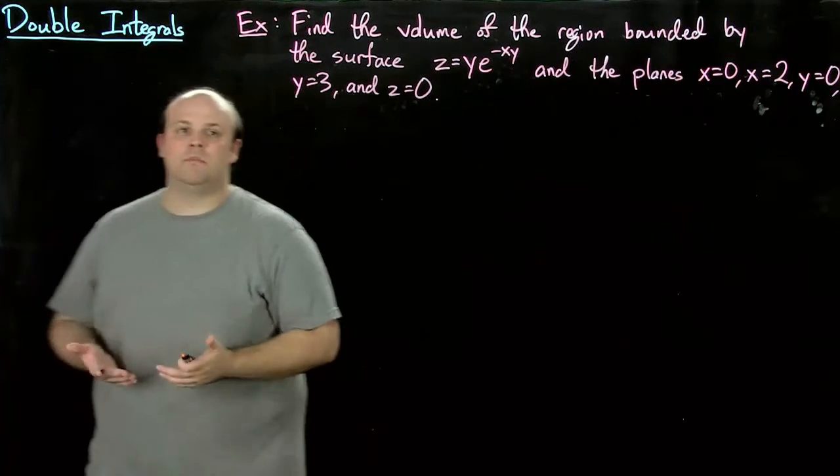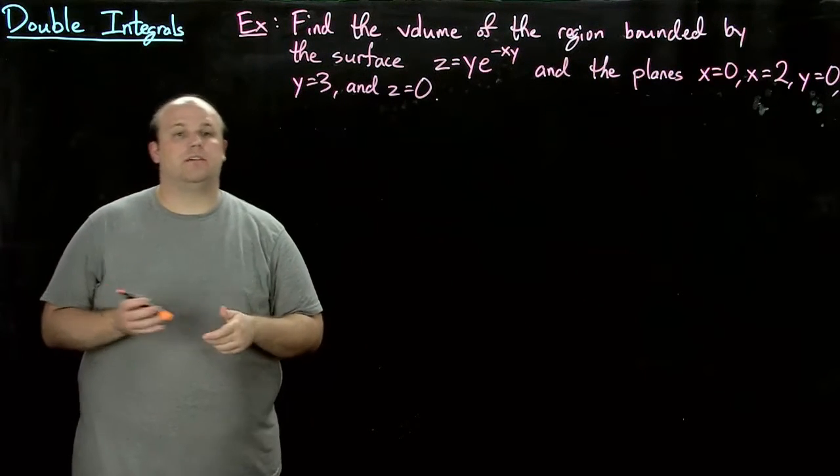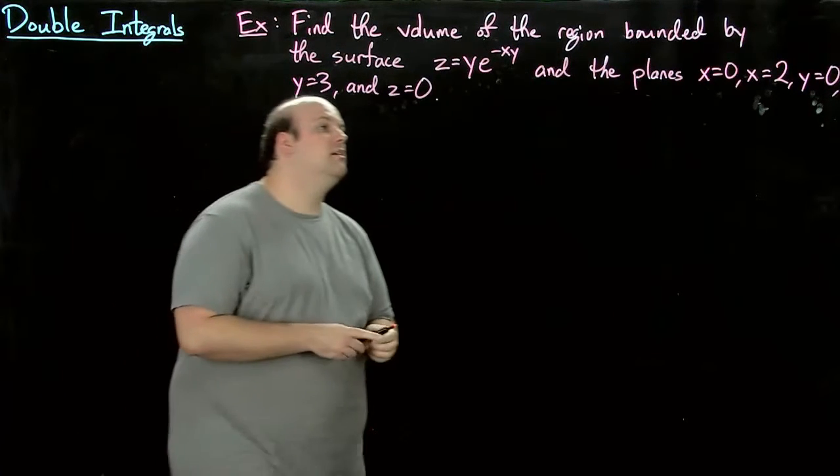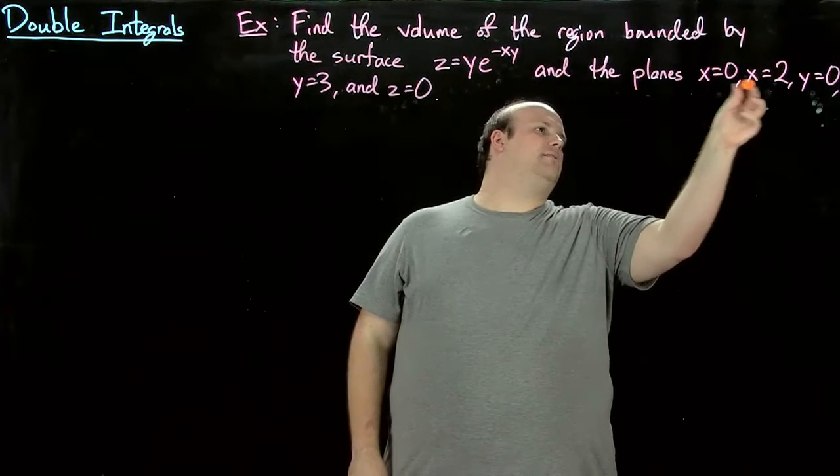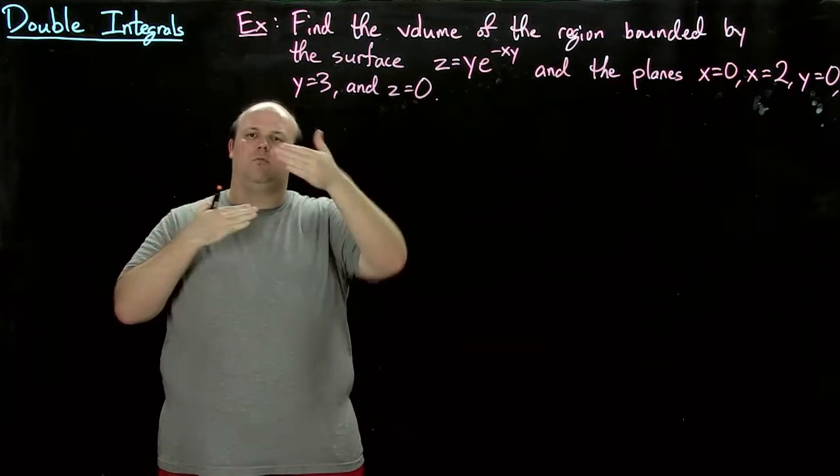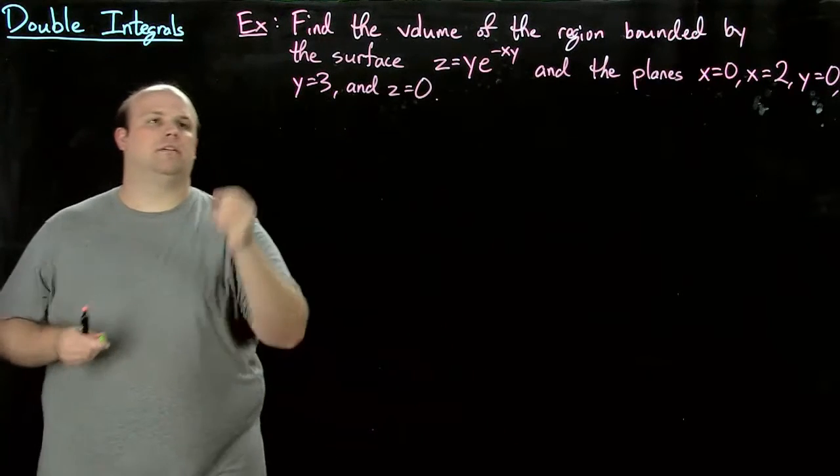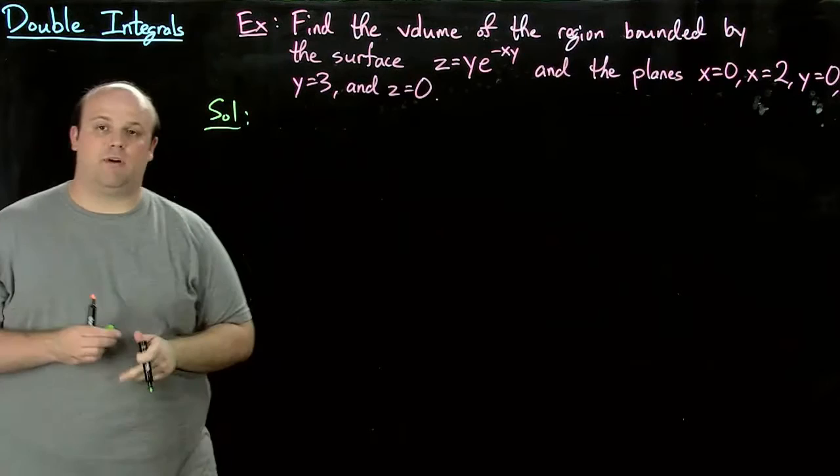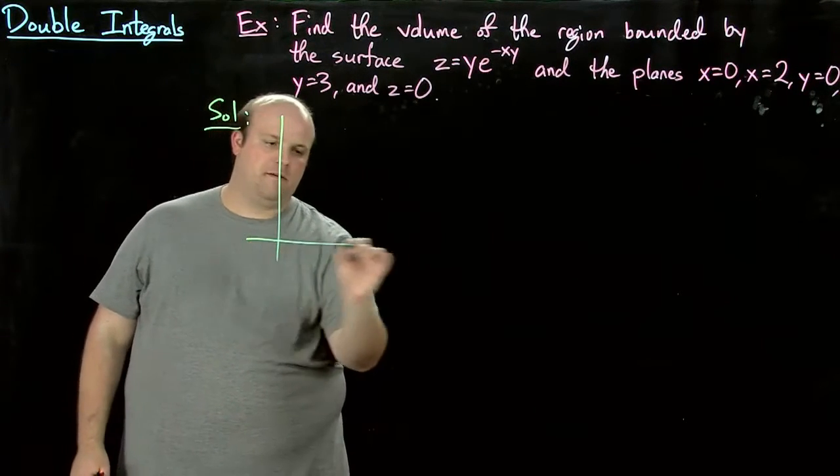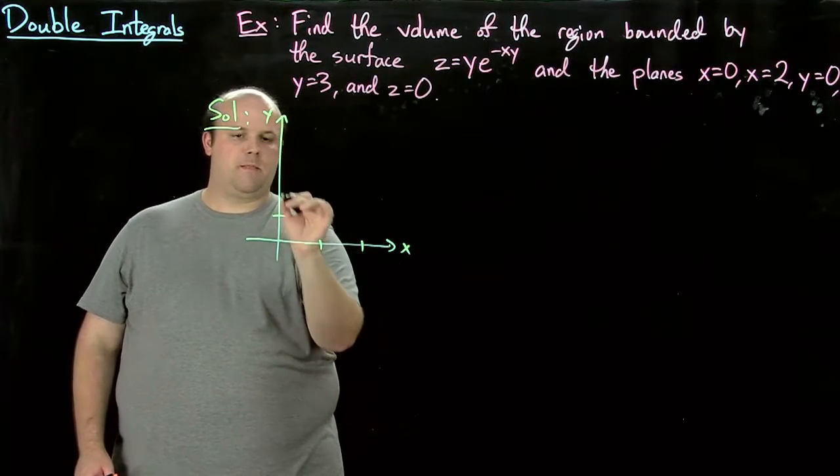So what does that look like? Let's look at what this region looks like in the xy plane first. These planes - x equals 0, x equals 2, y equals 0, and y equals 3 - function as walls to a room if you imagine it. What does the intersection with the xy plane look like? Well, it's simply just a rectangle.